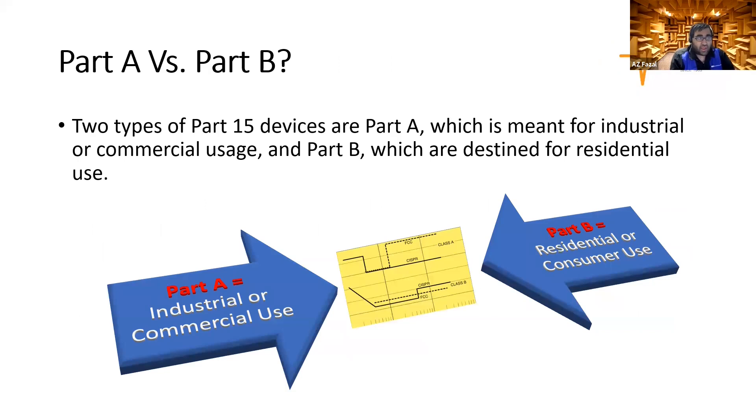So Class A devices are for industrial or commercial use, and Class B is for residential use, which consumers like us use at home.